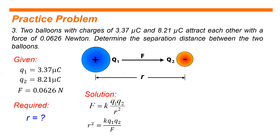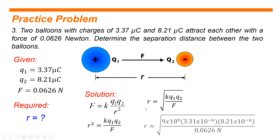Since we need the distance r, that equals the square root of k multiplied by q₁ multiplied by q₂, all over F. Substituting all values: square root of 9 times 10 to the 9th, times 3.37 times 10 to the negative 6, times 8.21 times 10 to the negative 6, all over 0.0626 newtons. The distance between the two objects is 2 meters.